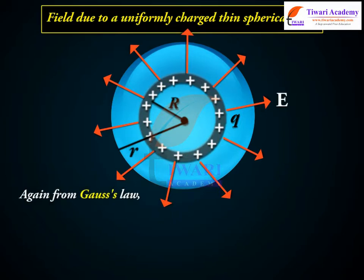Again, from Gauss's Law we have E times 4 pi r square equals Q by epsilon naught, E equals Q by 4 pi epsilon naught r square.